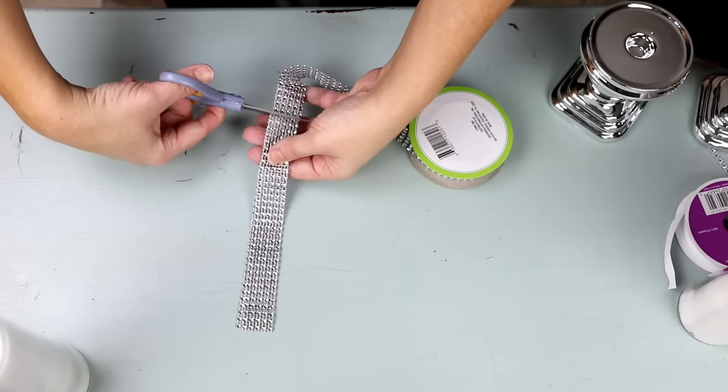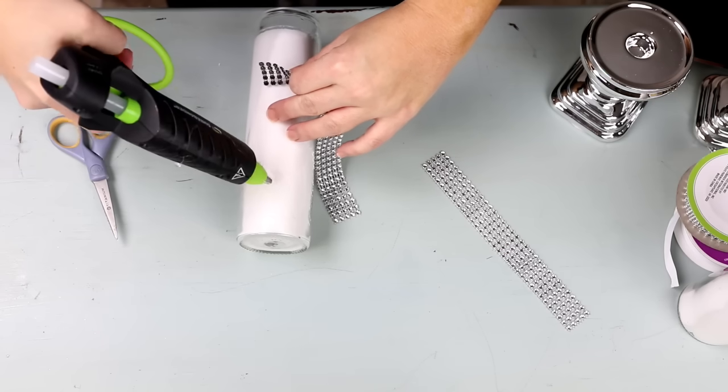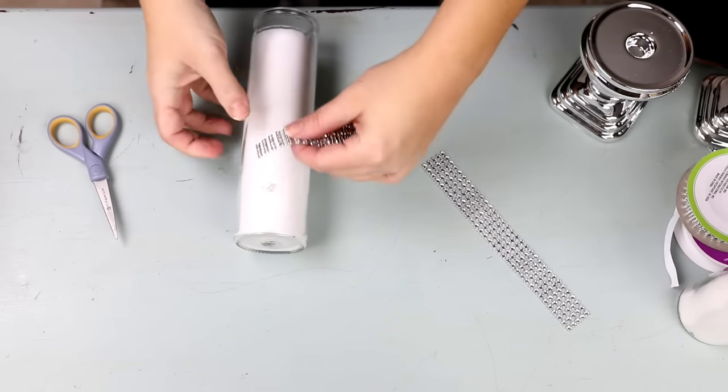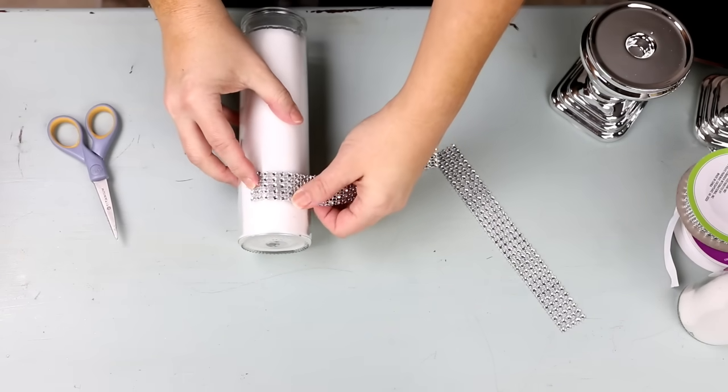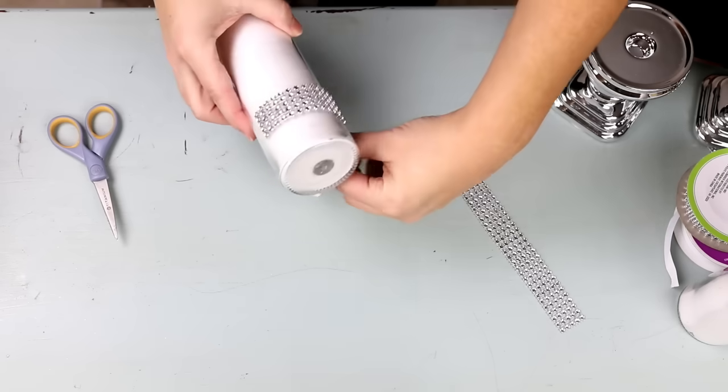The thing you want to remember about these candles is just put them next to each other whenever you're gluing the second one, just to make sure that you're putting them about the same height and they look identical.